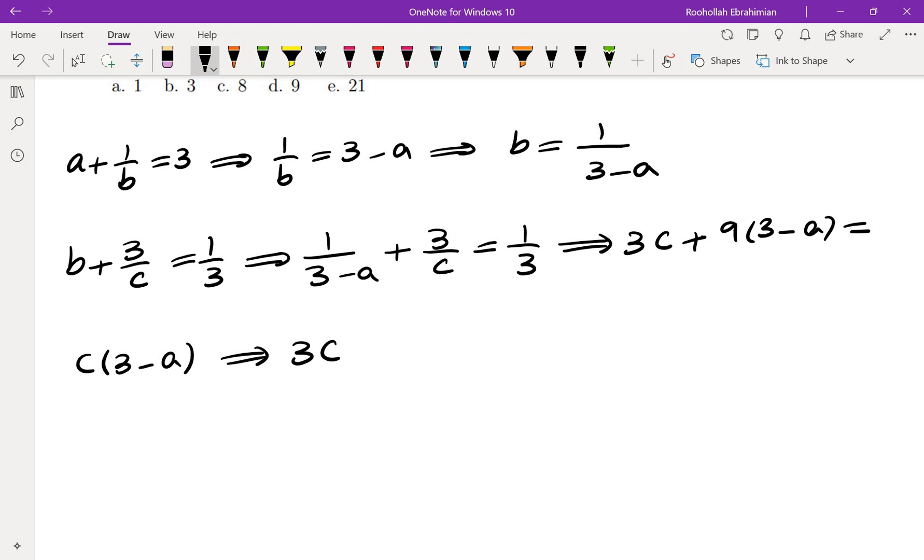That gives us 3c plus 27 minus 9a equals 3c minus ca.